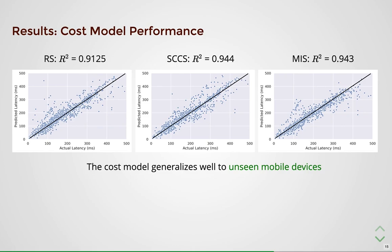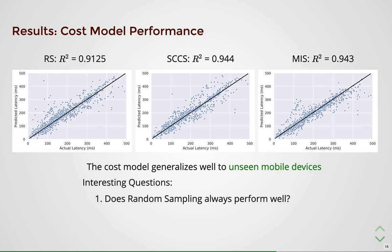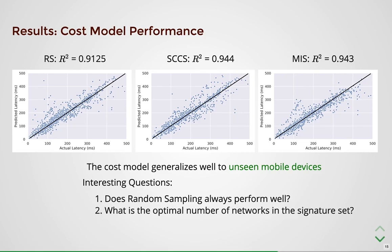Two interesting questions are worth investigating. First, even an unstructured approach such as random sampling seems to perform well with high R-squared values — is this always the case or dependent on the random choice? Second, what is the optimal number of networks in the signature set? Note that the smaller the signature set, the more efficient is the model due to lower characterization costs. Let us look at experiments that try to answer these questions.